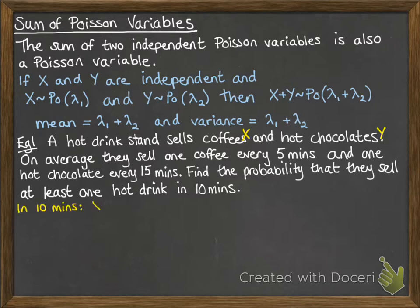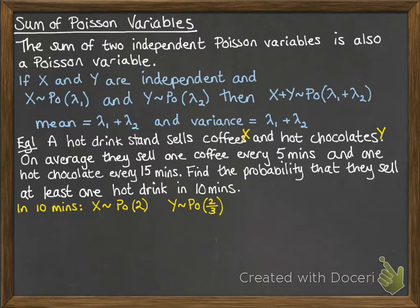We'll call coffees x and chocolates y. When writing this out properly you should state: let x be the number of coffees sold and y the number of hot chocolates. In 10 minutes, x follows a Poisson distribution with mean 2 coffees per 10 minutes, and y follows a Poisson distribution with mean 2/3 hot chocolates per 10 minutes. Adding them together, x plus y follows a Poisson distribution with mean 2 and 2/3. We are assuming they are independent of each other.